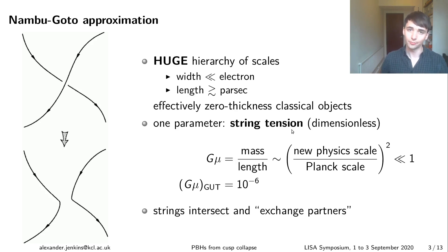One really nice thing about this approximation is then that the strings are described by just a single parameter, the string tension mu. Now we usually write this in the dimensionless combination Gμ, which like with any string is just equal to the mass per unit length of the string.